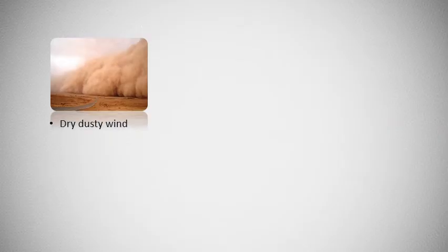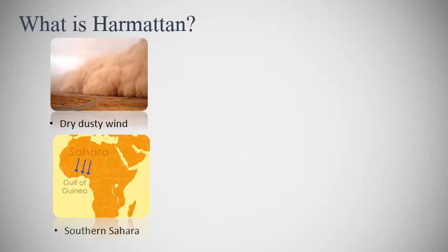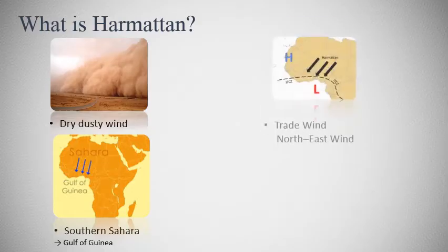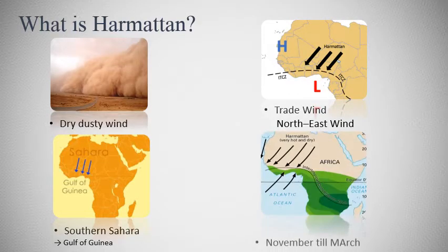So what exactly is a harmattan? The harmattan is a dry, dusty wind that blows from the south of the Sahara to the Gulf of Guinea. The wind direction is mainly northeast, making it a trade wind. The harmattan is a seasonal wind that blows from November to March.